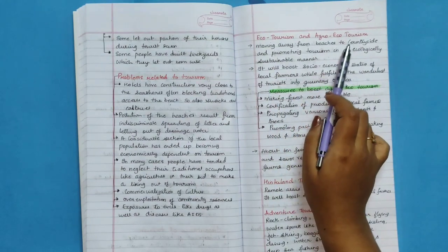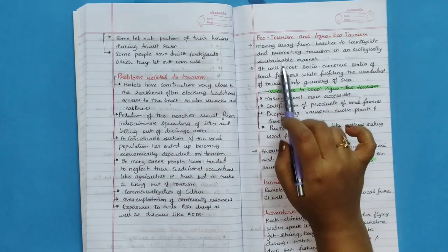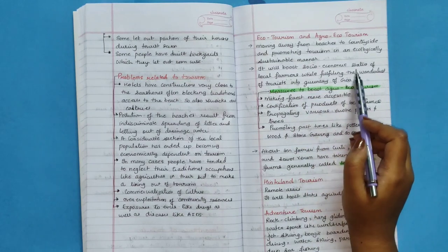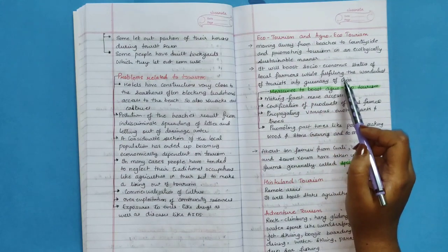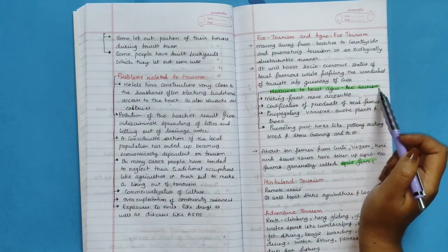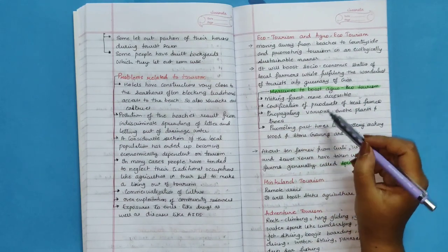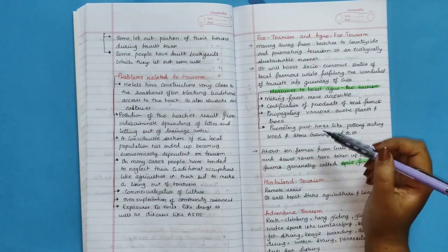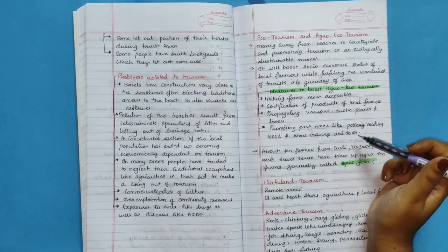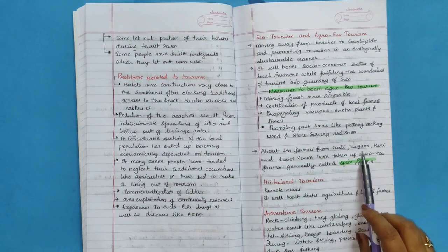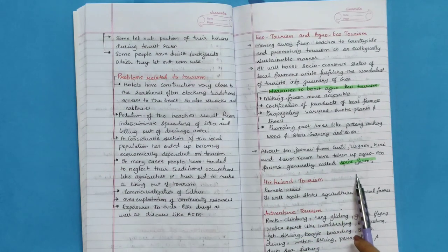Eco-tourism and agro-eco-tourism. Moving away from beaches to countryside and promoting tourism in an ecologically sustainable manner. It will boost socioeconomic status of local farmers while fulfilling the wanderlust of tourists into granary of Goa. Needs to boost agro-eco-tourism: making forests more accessible, certification of product of local farmers, propagating various exotic plants and trees, promoting pastimes like pottery making, wood and stone carving and so on. About 10 farmers from Curti, Usgao, Keri and Savoi Verem have taken up agro-eco-farms, generally called spice farms.